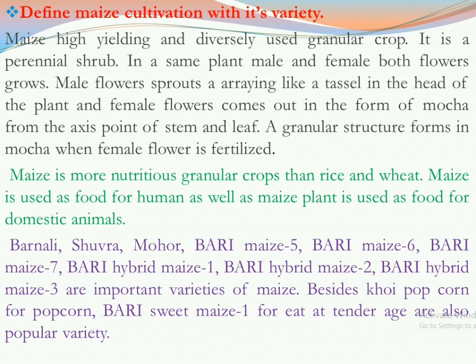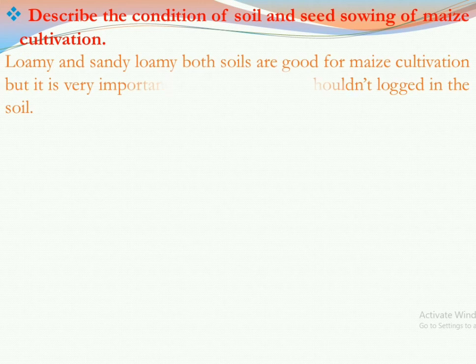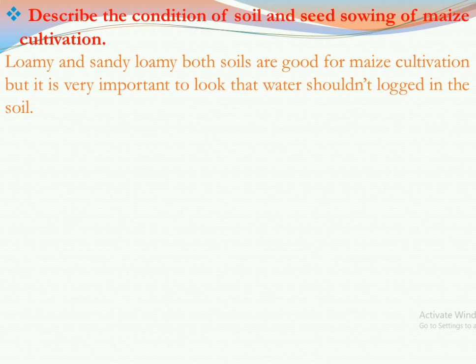Now let us see how maize cultivation is done. First we need to know about soil and seed sowing. For maize cultivation, loamy and sandy loamy soils are both good. However, it is important that water should not be stagnant or locked in the soil, because maize cannot tolerate waterlogging.